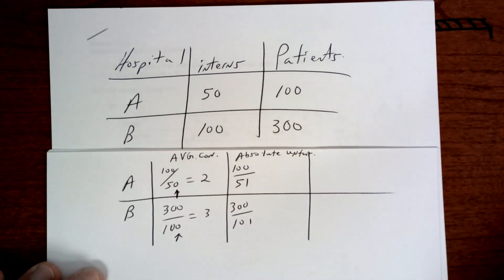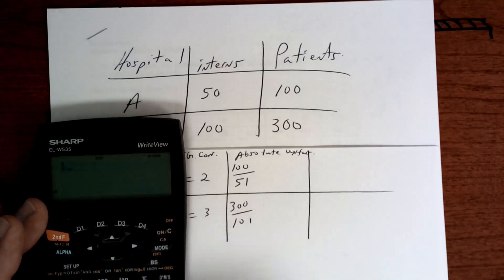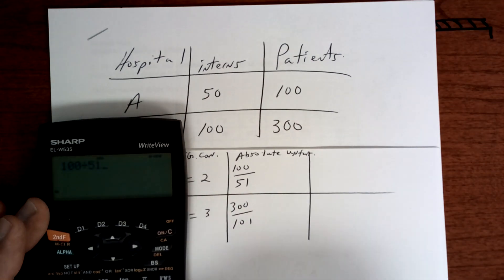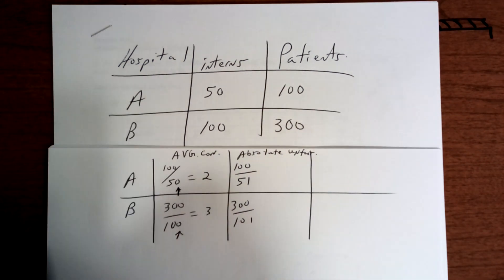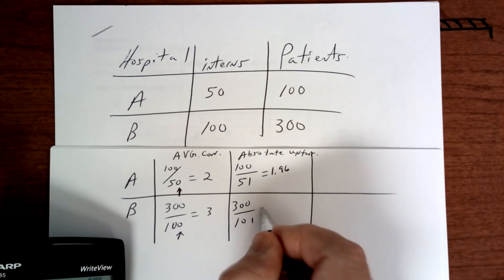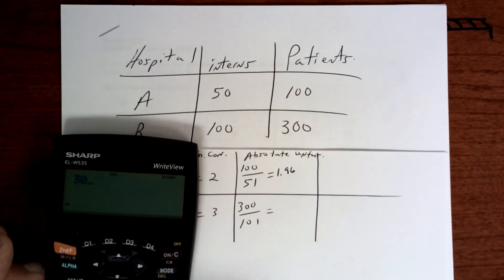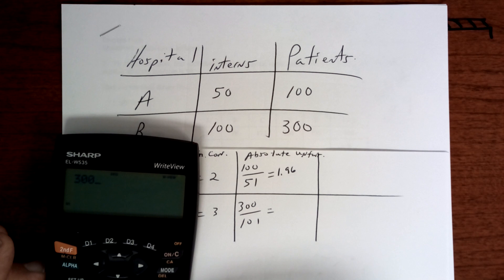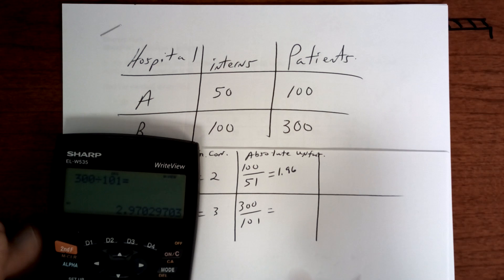So you take your calculator. When I do that, I get 1.96. And then over here, 300 divided by 101, I get 2.97.